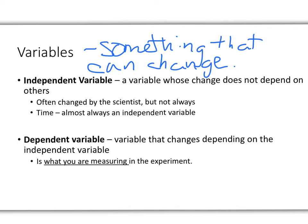You also have a dependent variable. It's a variable that changes depending on the independent variable. So a lot of times, that's what you're measuring in an experiment. We'll look at this later and try to apply it to some examples.